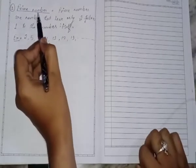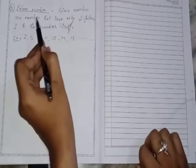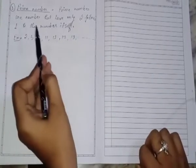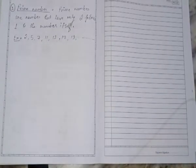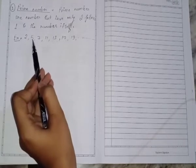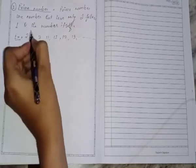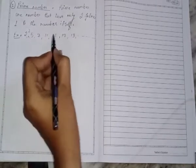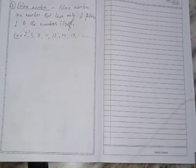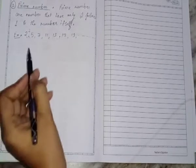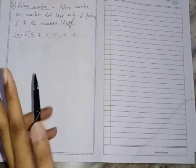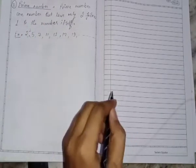The next topic is prime numbers. Prime numbers are numbers that have only two factors — that is 1 and the number itself. Examples include 2, 3, 5, 7, 11, 13, 17, 19. There are so many prime numbers. These numbers have only two factors: 1 and the number itself.